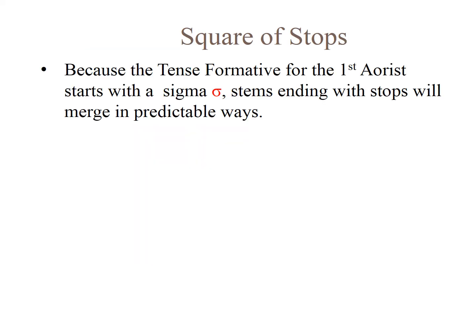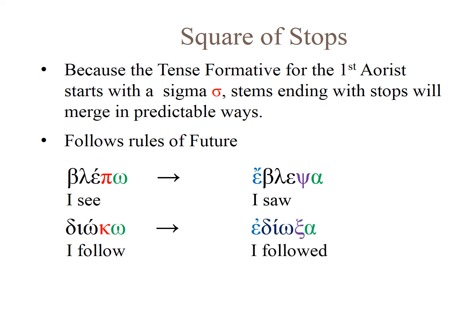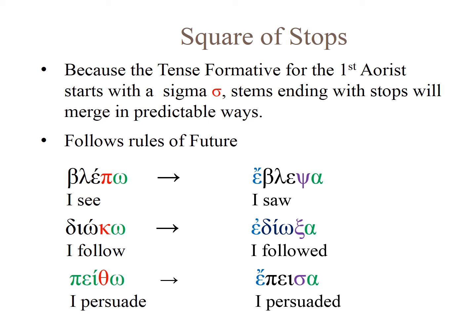Square of stops: because the tense formative for the first aorist starts with a sigma, stems ending with stops will merge in predictable ways, following the same rules as the future. Blepō — 'I see' — the sigma merges with pi to become psi, and we get eblepsa. In diōkō, the kappa merges with sigma to become xi, and we get ediōxa — 'I followed.' In peithō, with a theta — 'I persuade' — the theta drops off, leaving only the sigma, so we get epeisa — 'I persuaded.'